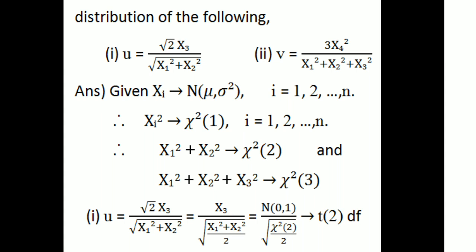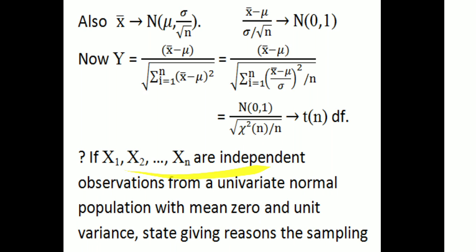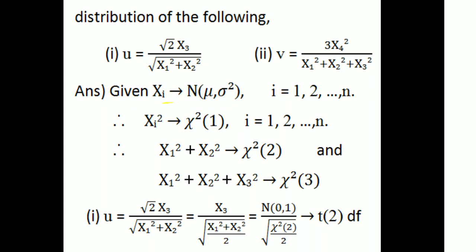Here xᵢ follows N(0,1), the standard normal distribution, with mean 0 and variance 1. So x₃ follows N(0,1). x₁² + x₂² follows chi-square distribution with 2 degrees of freedom.